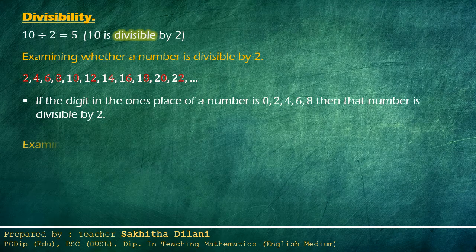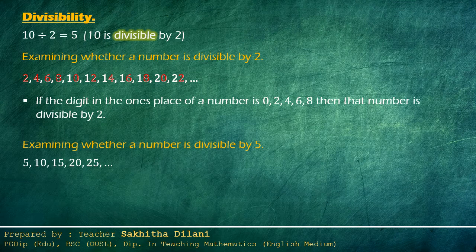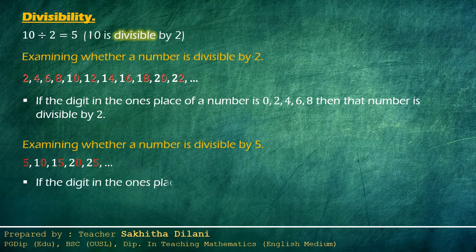Now let's see how to identify numbers which are divisible by five without a remainder. We write a few multiples of five: five, ten, fifteen, twenty, twenty-five. Examine the ones place digit of these numbers. They are five, zero, five, zero, five. You can see that the ones place digit of these numbers is always five or zero. So if the digit in the ones place of a number is zero or five, then that number is divisible by five without a remainder.